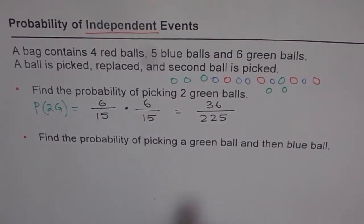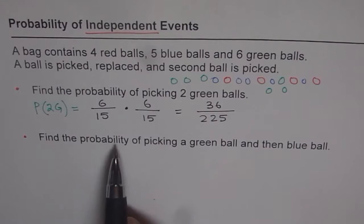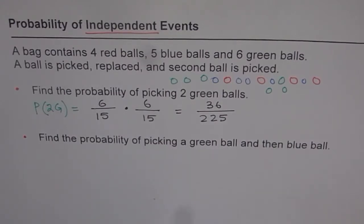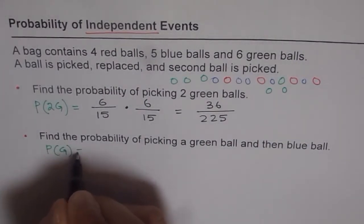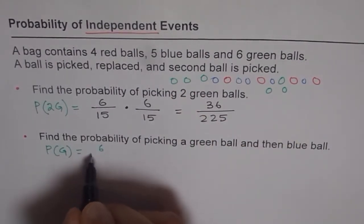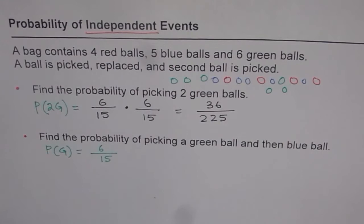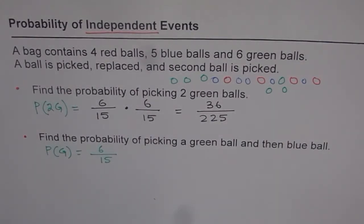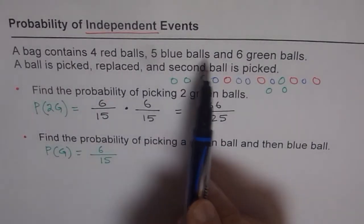Now let's go through the second question. I will adopt a slightly different approach this time — to apply different approaches for the same problem so that you learn. Find the probability of picking a green ball and then a blue ball. There are 6 green balls out of 15 total, so the probability of picking a green ball is 6/15. You replace it, and again the bag has 15 balls: 4 red, 5 blue, and 6 green.